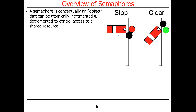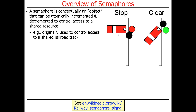So what's a semaphore? A semaphore is conceptually an object that can be atomically incremented and decremented to control access to a shared resource. The place this really became popular — you don't see this a whole lot in the U.S., but if you were to go to India or Europe, you'd see these all over the place — basically they're used to control access of trains to shared track.